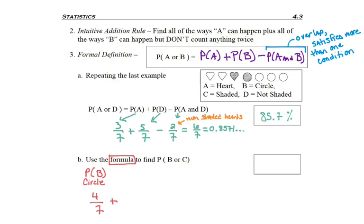Remember, count all of the circles. Then you would have had to find the probability of C, all of the shaded pieces. There were two of the seven shapes up there were shaded.